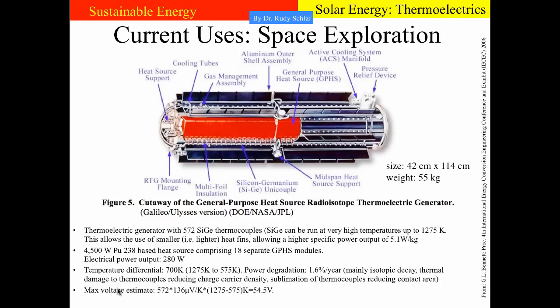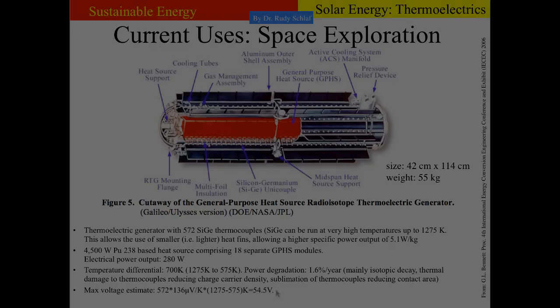One can estimate the maximum voltage of this generator. We have 572 thermoelectric elements, each with 136 microvolts per Kelvin. Calculating with the 700 K temperature differential gives a maximum voltage of 54.5 volts for this generator.